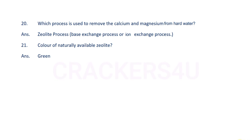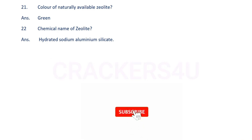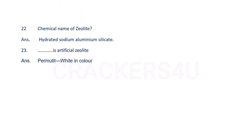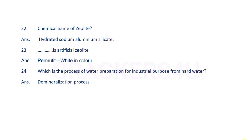The color of naturally available zeolite is green. The chemical name of zeolite is hydrated sodium aluminium silicate. Artificial zeolite is called permutate, and it is white in color.